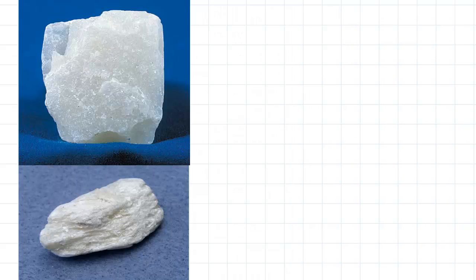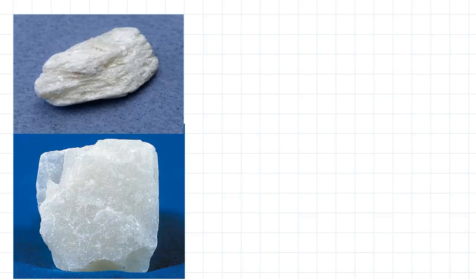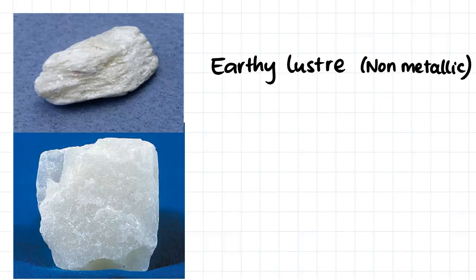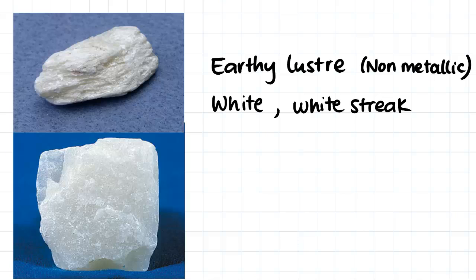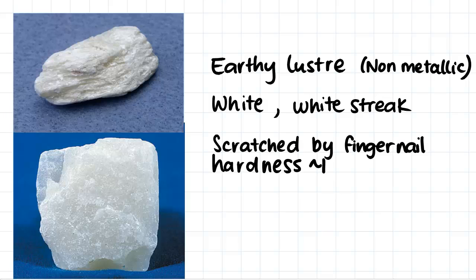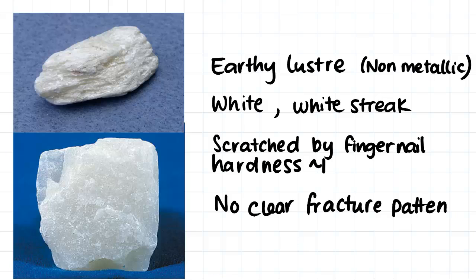So this is the first mineral sample we're going to have a look at. For all the mineral samples I've included two photos of each sample, just to show you that the same mineral can always look quite different. This mineral has an earthy luster and the luster is definitely non-metallic. The mineral is a whitey color and when we scrape it along a ceramic plate we see that it produces a white streak. We can scratch the mineral with our fingernail quite easily and it has a hardness of 1 on Mohs scale of hardness. The rock doesn't show any clear fracture pattern, and something else we notice is that it has quite a waxy feel when we pick it up. This mineral is talc.